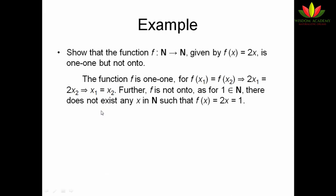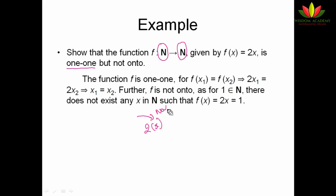So up to now we have seen four functions: onto, into, one-to-one, and many-to-one, and the combination of onto and one-to-one is known as bijective function. Now let's see an example. The function f from natural numbers to natural numbers defined by f(x) = 2x is one-to-one but not onto. We know it is one-to-one because for any natural number x, 2x gives a unique natural number output.